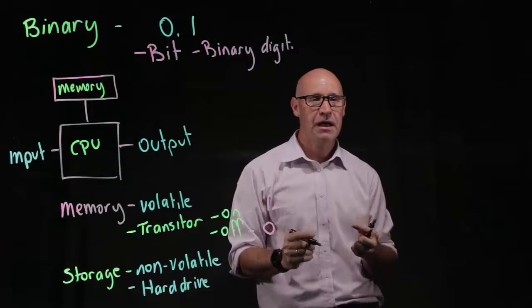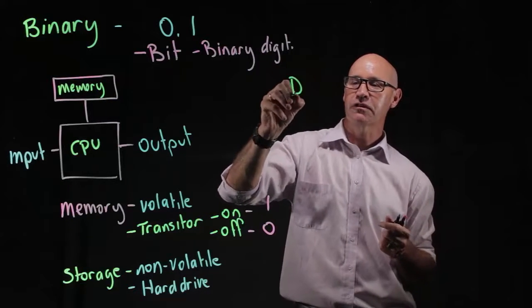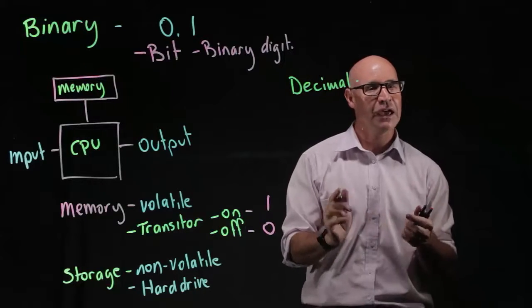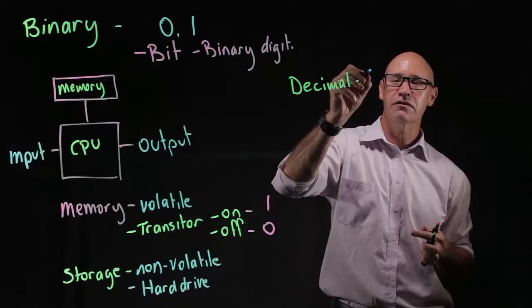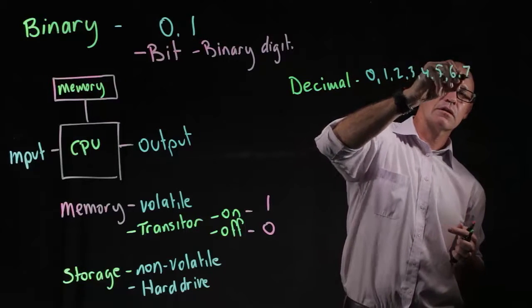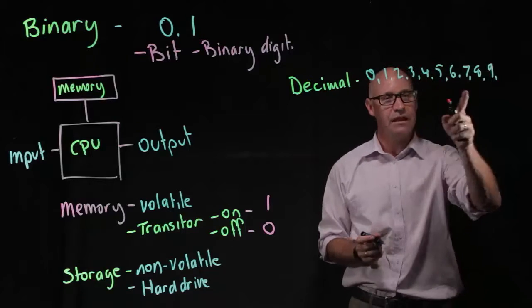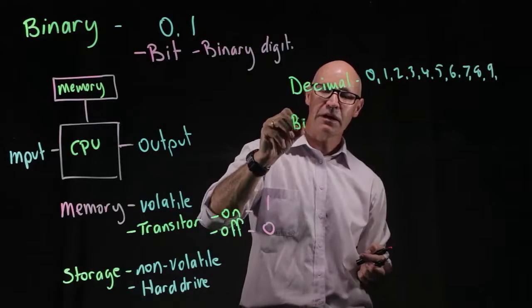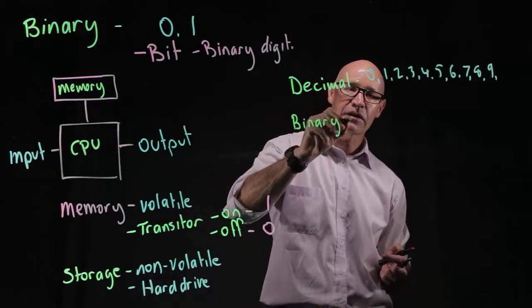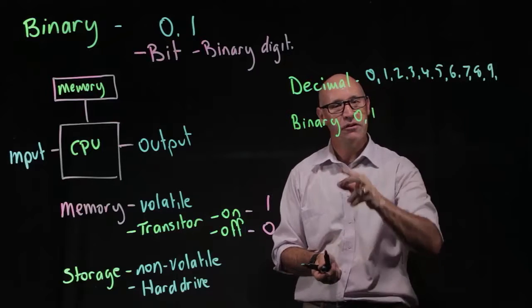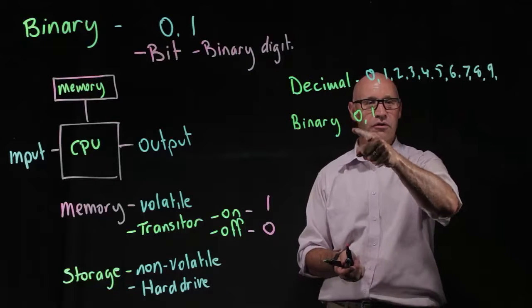So if we think about our decimal system, deci means 10, because we've actually got 10 different digits. We've got zero, one, two, three, four. So there's 10 different digits. Whereas with binary, we have two, that's it, zero and one. So how on earth can we express numbers using binary?